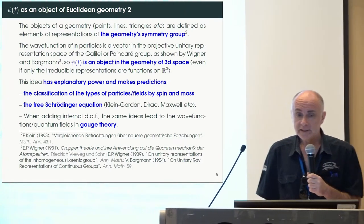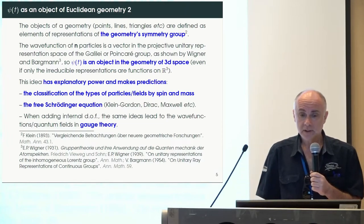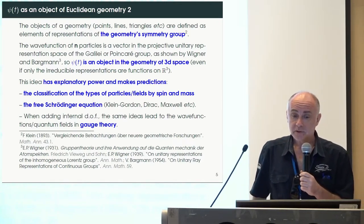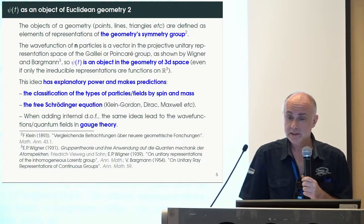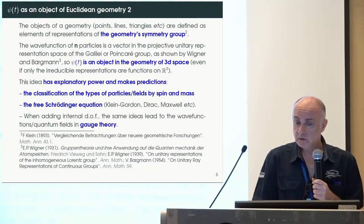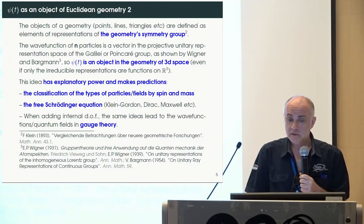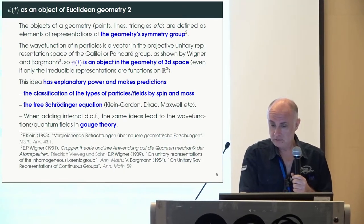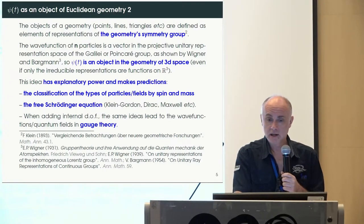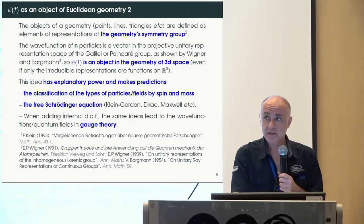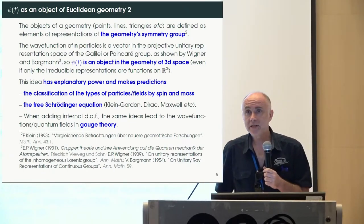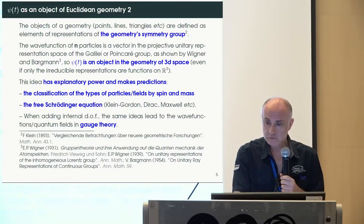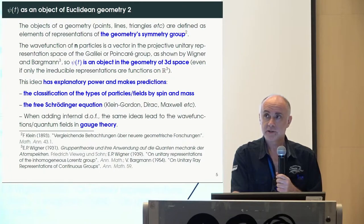This idea is so powerful that it made predictions and explained things already observed: the classification of types of particles and fields by spin and mass followed from this geometric approach. The free Schrödinger equation for various spins, and if you add internal degrees of freedom and apply similar principles locally, you can get what we know from gauge theories. So the wave function, even depending on many parameters, is something from the geometry of space — not from some esoteric space.